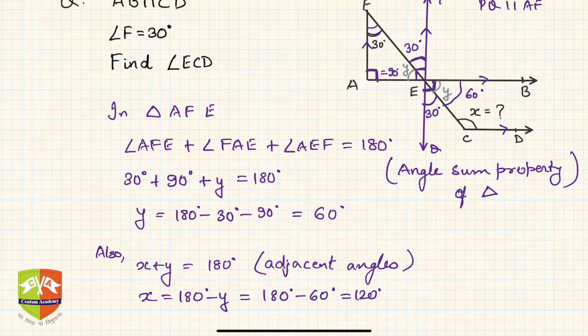So if this is 30 degrees, then this angle has to be 30 degrees. Why? Because of vertically opposite angles. CF and PQ are two lines intersecting at E. So 30, 30. Now if this is 30 and the entire angle QEB is 90 degrees...